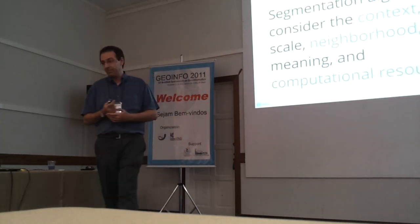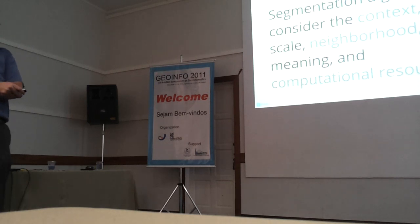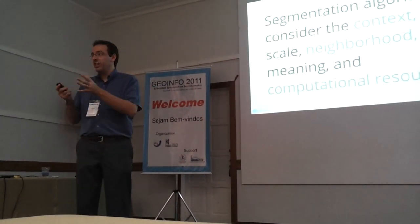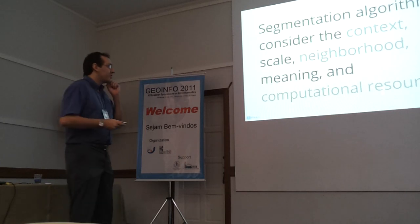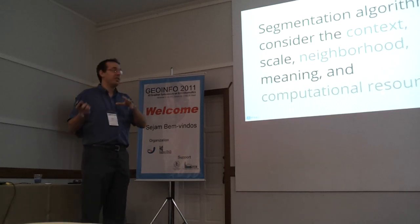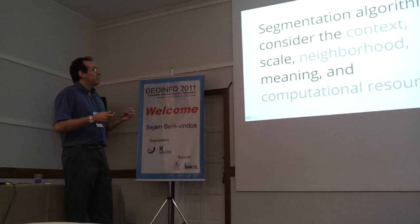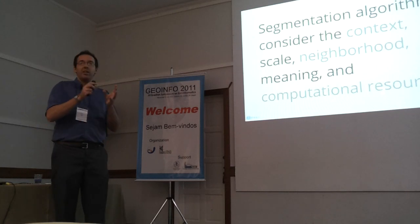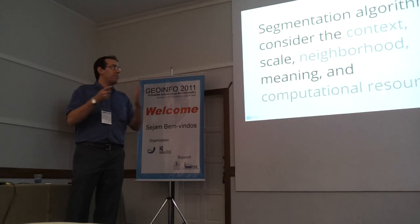Some important remarks about segmentation algorithms: they must consider context, scale, neighborhood, meaning, and also computational resources. Remote sensing images are very large, especially when considering the entire scene, so we need significant computational resources to get good segmentation results. For example, if we are working with an urban image, the polygons of interest might be rooftops, whereas different targets require different context.